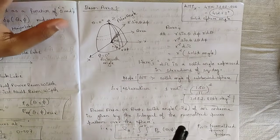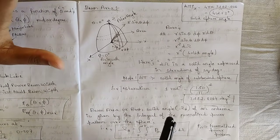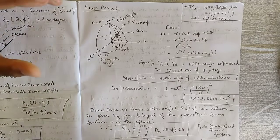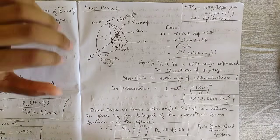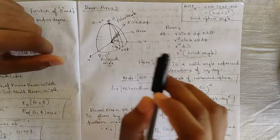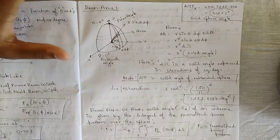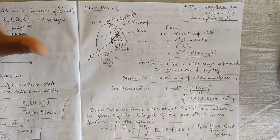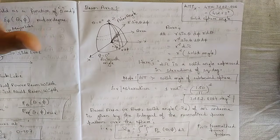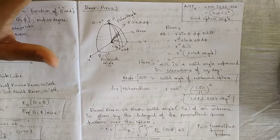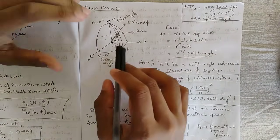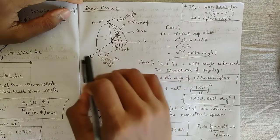Today's concept starts with beam area. What do you mean by beam area, what is the formula attached to it, and how it relates to the spherical coordinate system — everything we are going to discuss. Before starting the concept of beam area, you should know that it is represented in three-dimensional space using the spherical coordinate system. The parameters in spherical coordinates are r, theta, and phi, and based on that the beam area is defined.